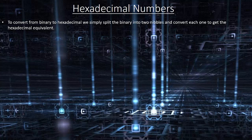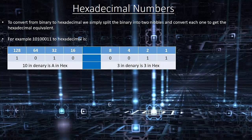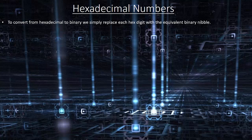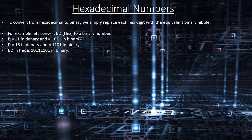To convert from binary to hexadecimal, simply split the binary into two nibbles and convert each one to get the hexadecimal equivalent. For example, 10100011 in binary splits into 1010 and 0011, giving A3 in hexadecimal. To convert from hexadecimal to binary, simply replace each hex digit with the equivalent 4-bit binary nibble. For example, BD in hex: B equals 11 in denary and 1011 in binary; D equals 13 in denary and 1101 in binary. So BD in hex is 10111101 in binary.